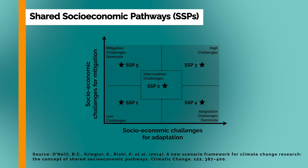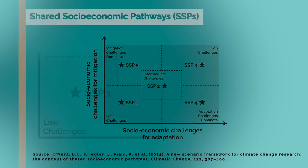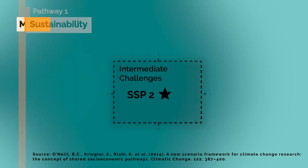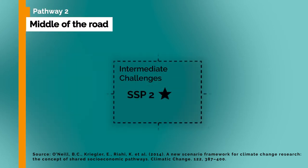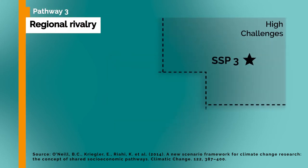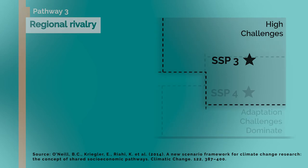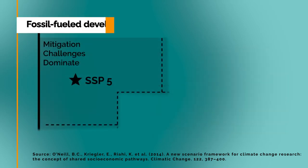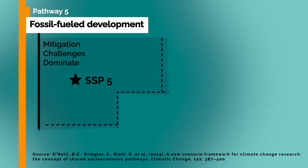They include these five shared socioeconomic pathways. Pathway 1 represents a world of sustainability-focused growth and equality. Pathway 2 envisions a middle-of-the-road world, where trends broadly follow their historical patterns. Pathway 3 imagines a fragmented world of resurgent nationalism. Pathway 4 proposes a world of ever-increasing inequality. And finally, Pathway 5, a world of rapid and unconstrained growth in economic output and energy use.